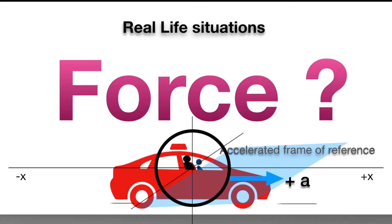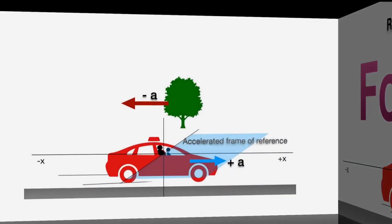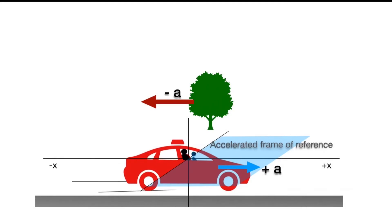When an observer is in accelerated frame of reference and observes object motion, he sees something which is not explainable by using Newton's law of motion.